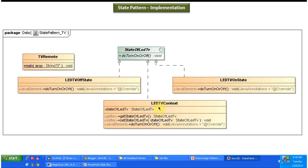LEDTVOffState also implements the StateOfLEDTV interface and provides implementation of doTurnOnOrOff, which turns off the TV. The LEDTVContext is the concrete class that maintains the state of the LED TV — if the state is off it turns off the TV, if on it turns on the TV. TVRemote has the main method used to demonstrate this pattern.